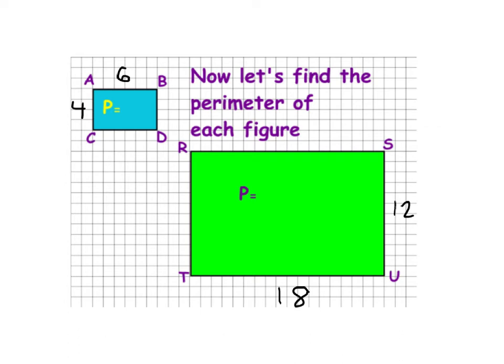We're going to start with finding the perimeter of these two shapes, and this is just a refresher on how to do that. Remember, perimeter is adding up all of the sides together. So if we look at the first rectangle, 6 by 4 by 6 by 4 — if you add 6 plus 4 plus 6 plus 4, we get 20. And then for the bigger one, it's 12 plus 18 plus 12 plus 18, which gives us 60.